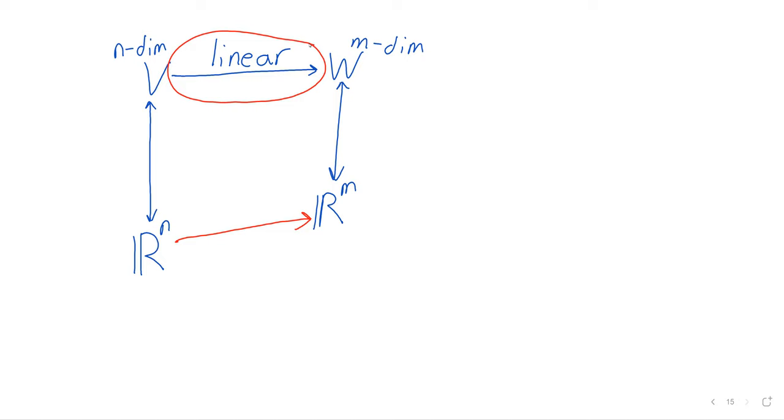That wouldn't make any sense. So there ought to be a linear transformation from R^n to R^m that corresponds in some way to the linear transformation from V to W.